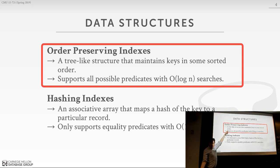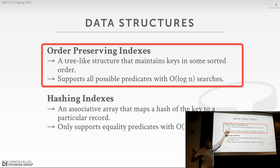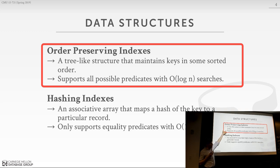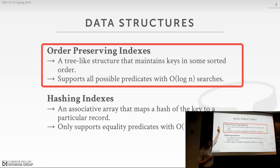Why is the order-preserving index the default? Range queries. What most people do when they first build an index is run a select count star or some range query. People get upset if you build an index and then you can't use it for the first query you throw at it. So these things are for general purpose, and that's what everyone goes with.